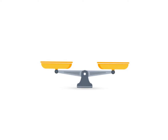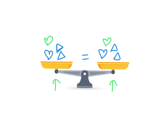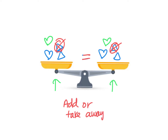One last thing to think about: if I have a scale with a heart and two triangles on each side, and it's balanced, what if I added a heart to one side? I'd have to add a heart to the other side too. You can add the same thing to both sides of a scale and it will stay balanced. Similarly, if I took a triangle away from one side, I'd have to take a triangle away from the other. Whatever you do to one side, do to the other.